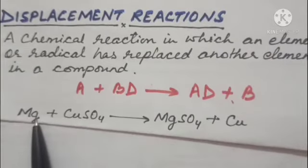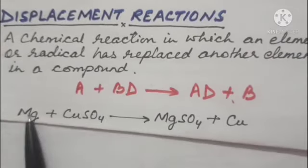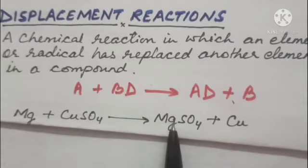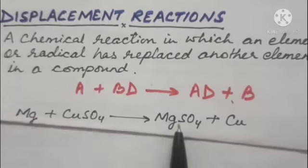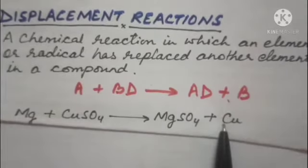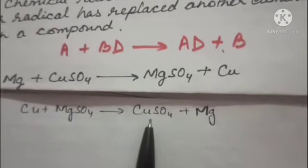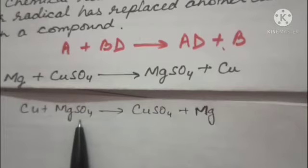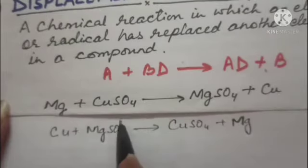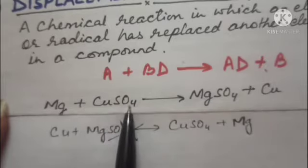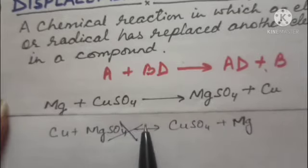For example, magnesium reacts with copper sulfate. Magnesium replaces copper and comes in its place, forming MgSO4 (magnesium sulfate) and copper. Now, is the reverse equation possible — copper reacting with magnesium sulfate to give copper sulfate and magnesium? No, this reaction is not possible. Why? Because the ability of an element to displace another element is determined by its relative position in the electrochemical series.